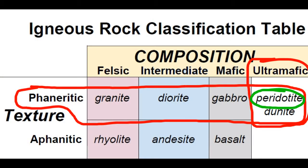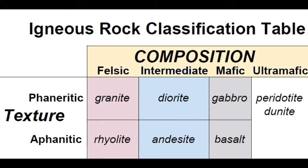The other common ultramafic rock is peridotite. This rock name derives from peridot, the gemmological name for olivine. However, whereas dunite is composed of 90% or more olivine, peridotite contains large amounts of other mafic minerals, like pyroxene, that significantly darken the tone of the rock.